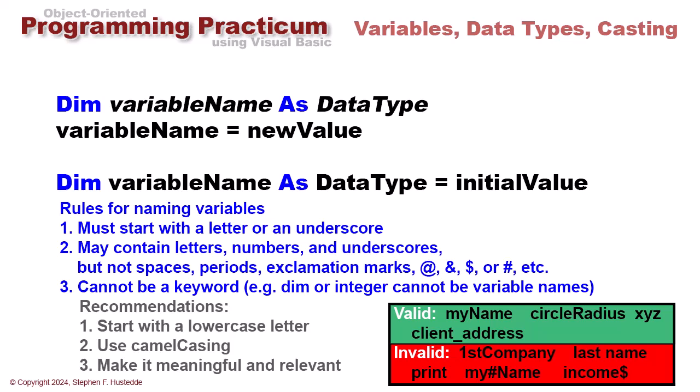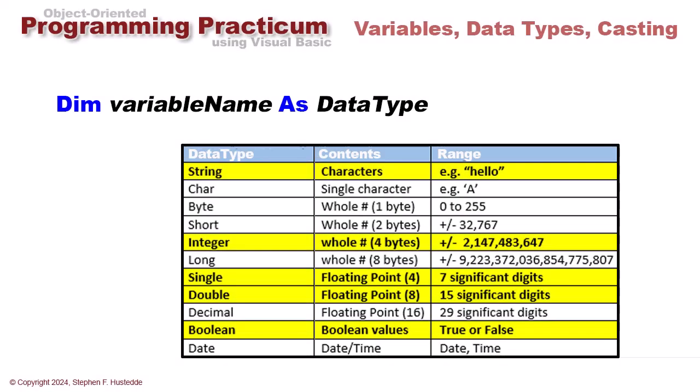Last name has a space in it—that's not allowed. Print is a keyword. My hashtag name uses a special character, not allowed, as does income dollar sign. Those will all generate errors.